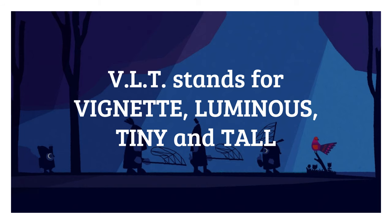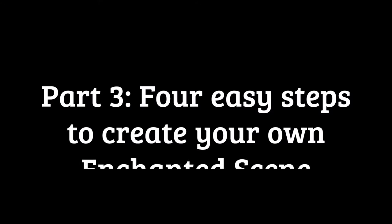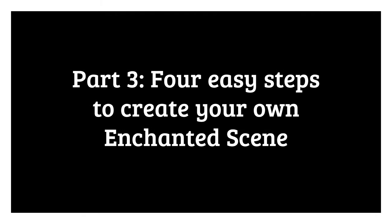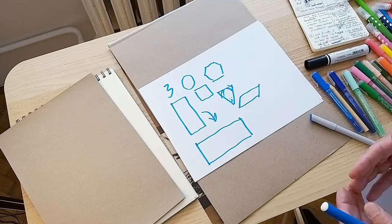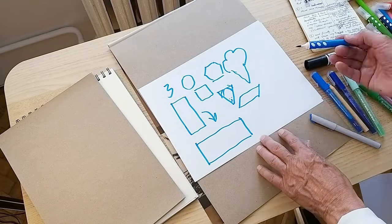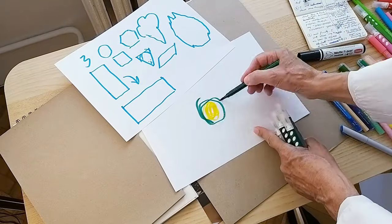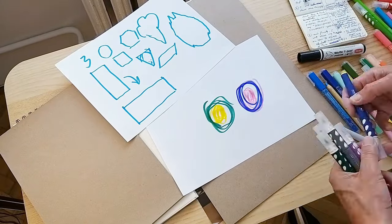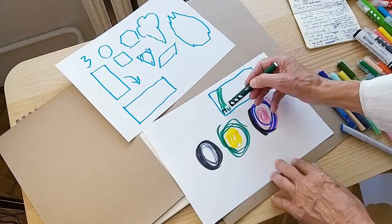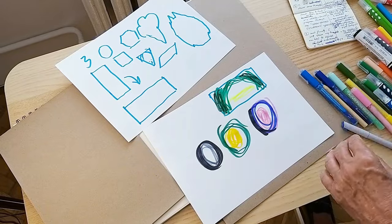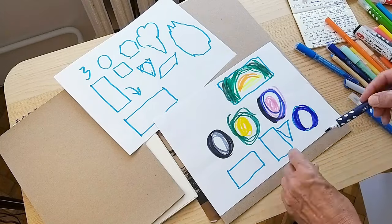Are you ready to try creating your own enchanted scene using the VLT method? Follow these four steps for creating your own VLT artwork. The first step is all about the shape of your picture and the mood you want to create. We're going to experiment with very quick sketches, trying different shaped vignettes — they might be tall and thin, wide and long, round, or square — and thinking about the color you want in the luminous center. Use materials you can sketch very quickly with and aren't worried about details.